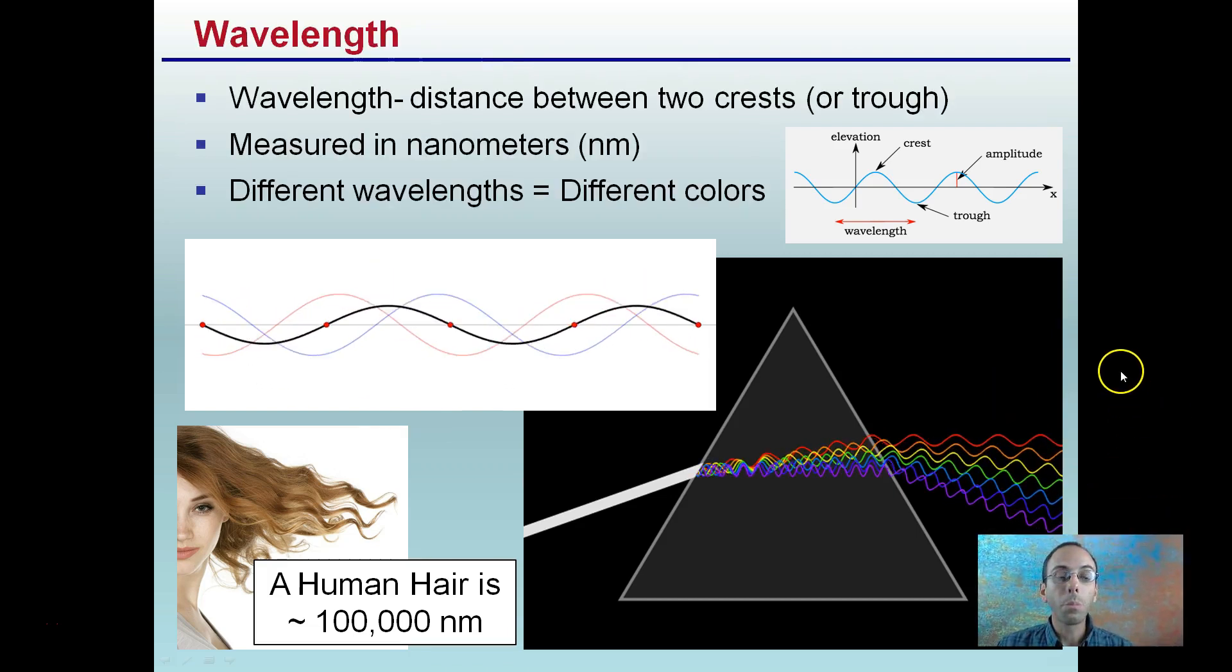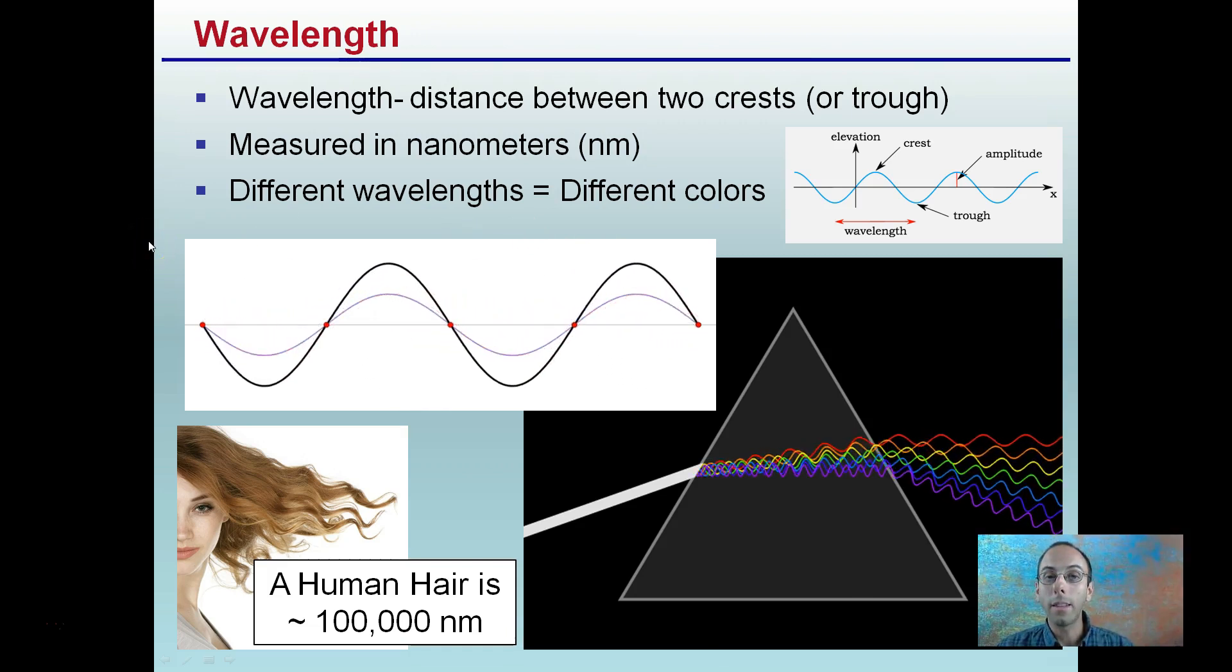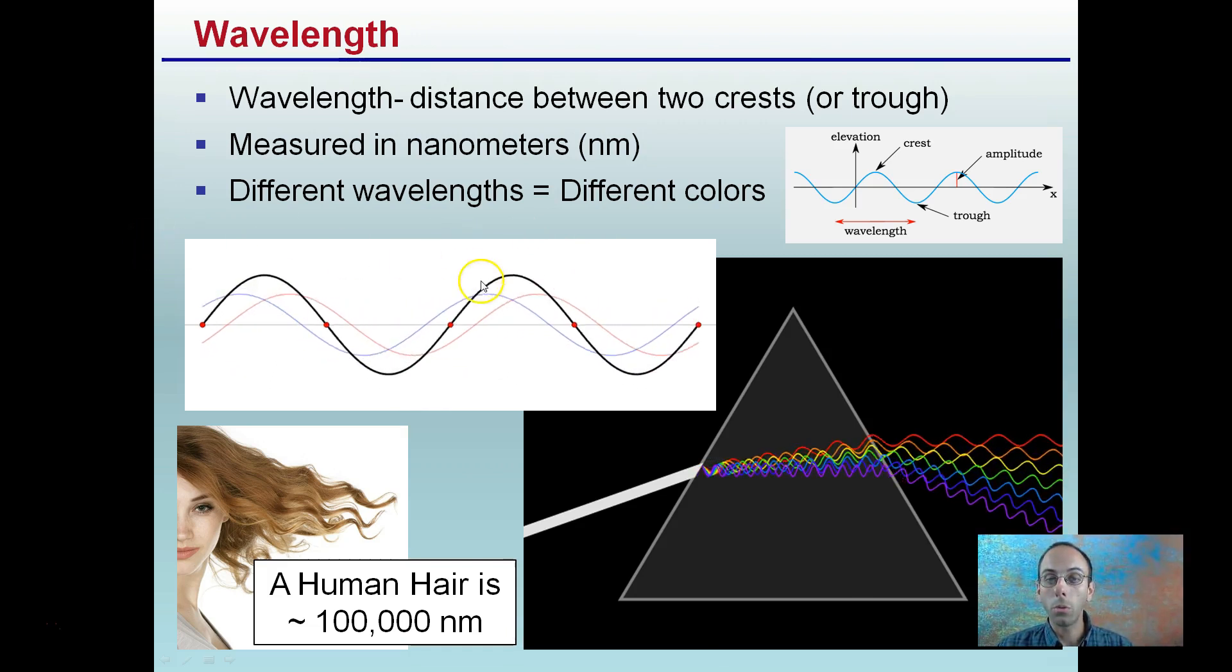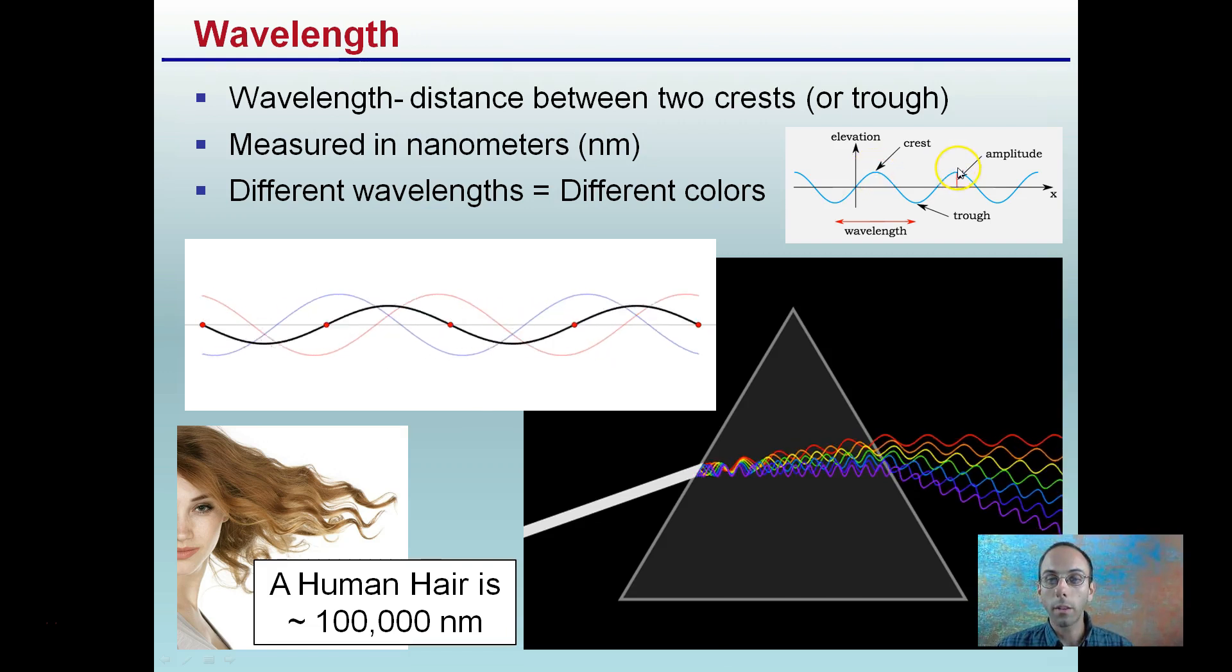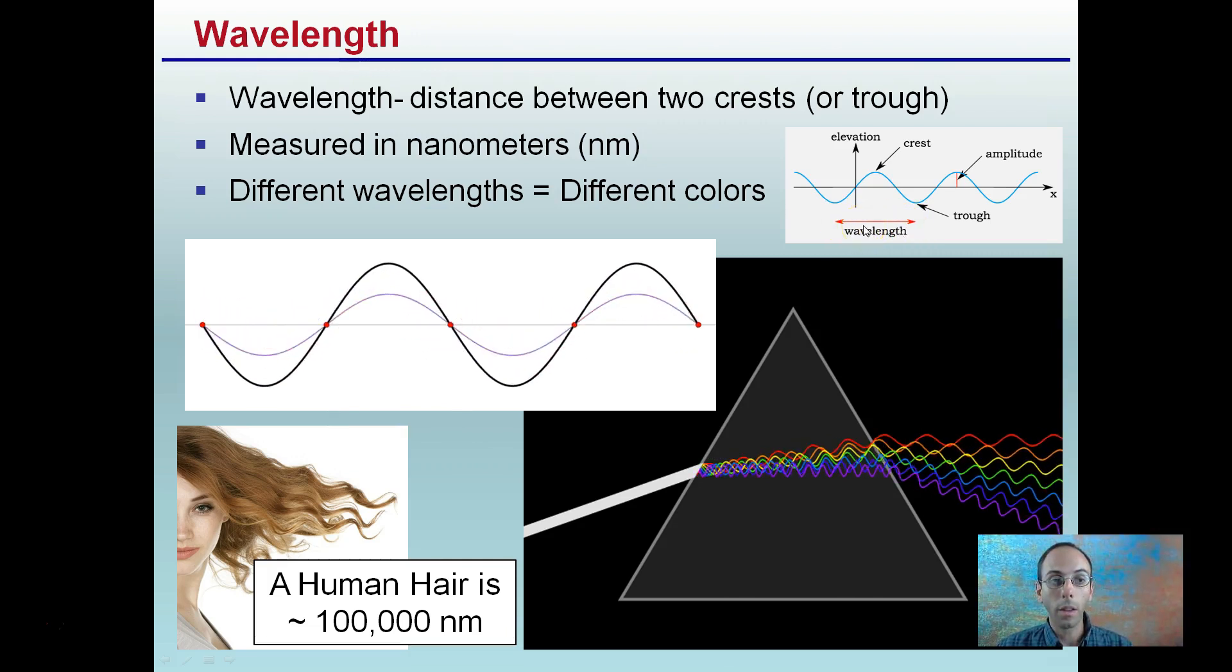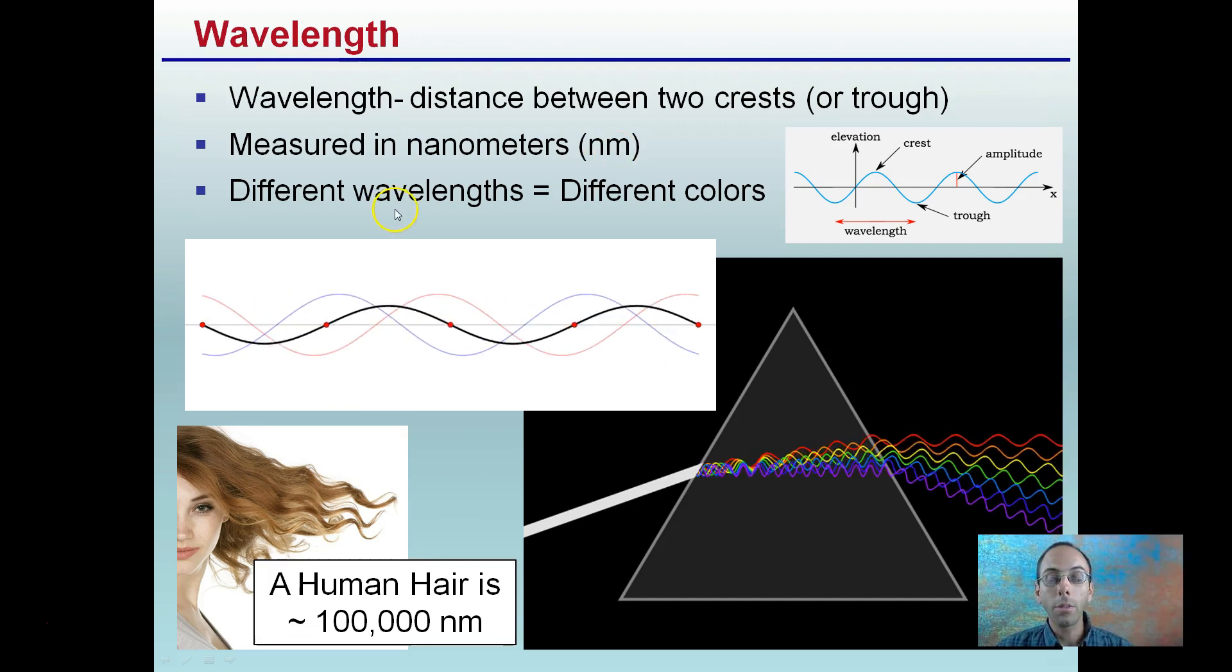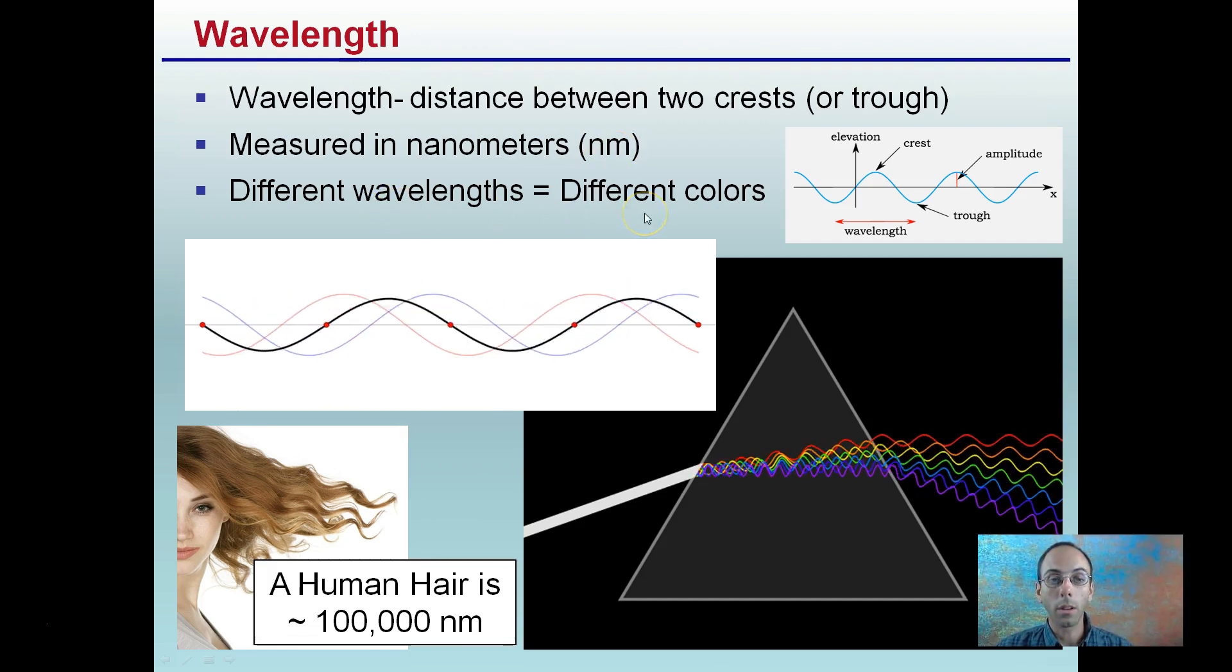So wavelength. We look at light, we consider wavelengths. Wavelength is defined as the distance between two crests or two troughs. So we see here's a crest, here's a crest. This should be considered the wavelength. Here's a trough, here's a trough. It's shown here as a wavelength. It's measured in nanometers, nm, and different wavelengths equal different colors.